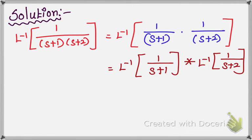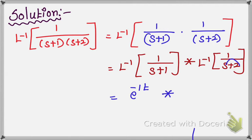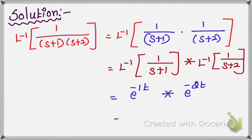Now, using the definition of the inverse Laplace transform: L inverse of 1 over (s+1) — here +1 is there, so you take minus 1 — that equals e to the power of minus t. I give the formula in the description box. So, using e power minus t for the first term, and since +2 is there, it is of the form e power minus 2t for the second. So, e power minus t star e power minus 2t.